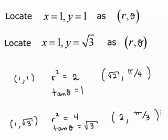Now suppose we have the point x equals 1, y equals square root of 3. r squared is x squared plus y squared, which is 4. Tangent of theta is y over x, which is the square root of 3. That means that r is 2 and theta is pi over 3. So our new point is 2, pi over 3 in r theta coordinates.